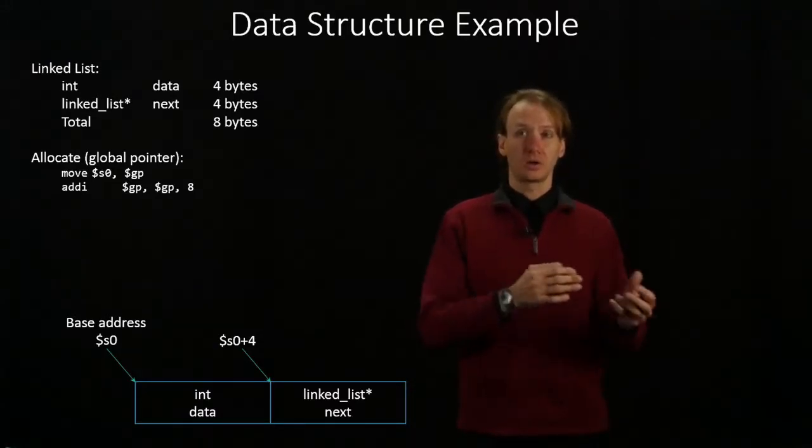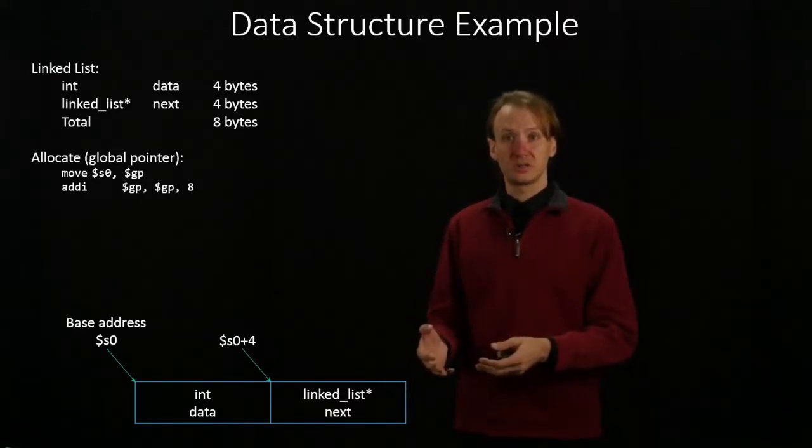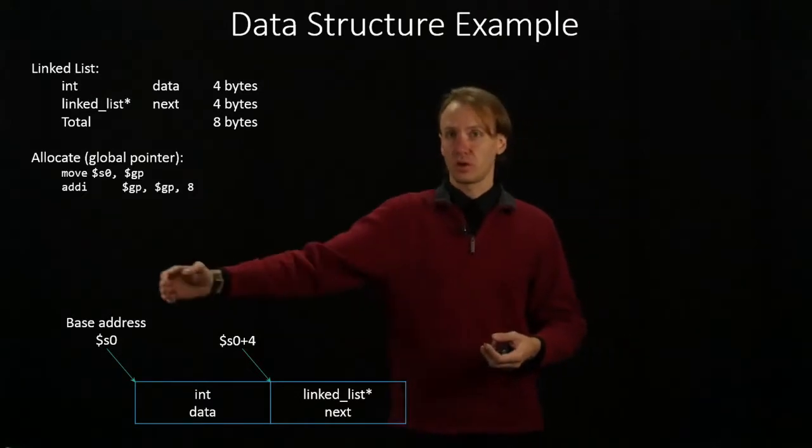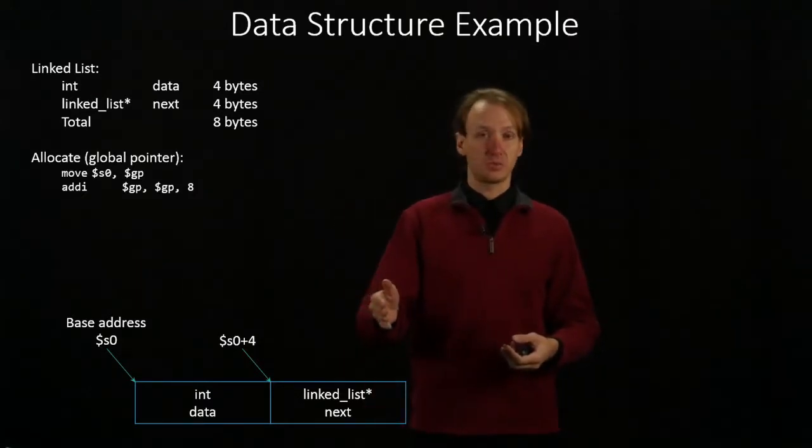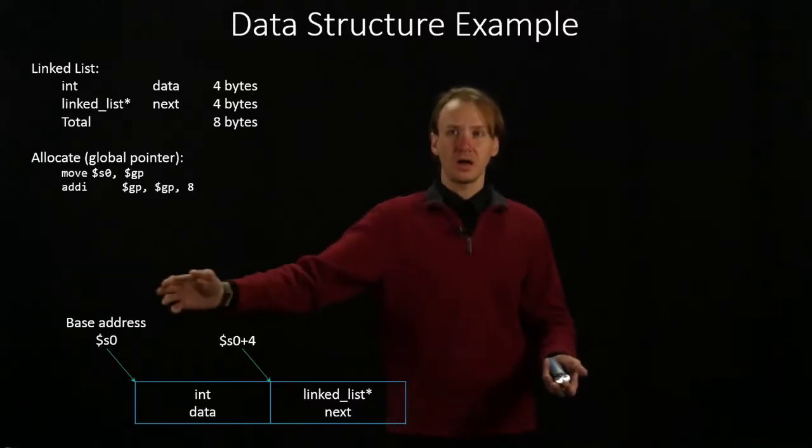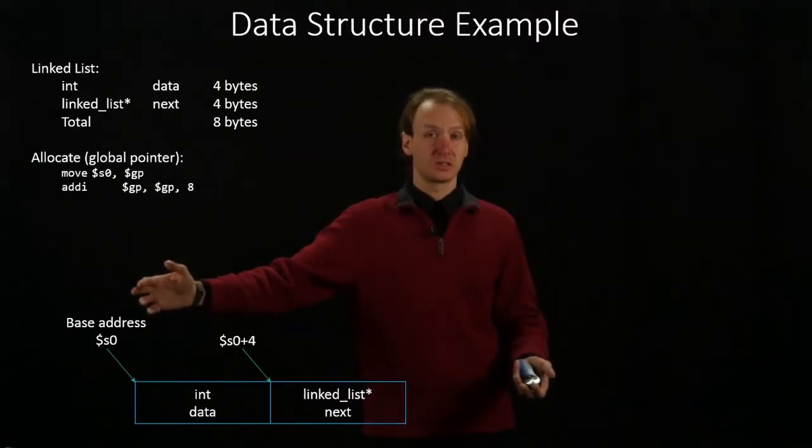So in this case, I would copy the global pointer into S0, and then I would move the global pointer up by eight bytes. Moving the global pointer up by eight bytes would allocate that eight bytes that I need. And I would have already copied the address into S0.